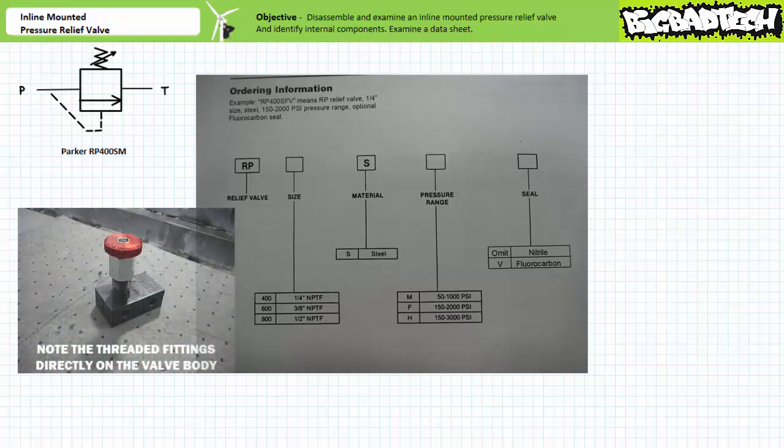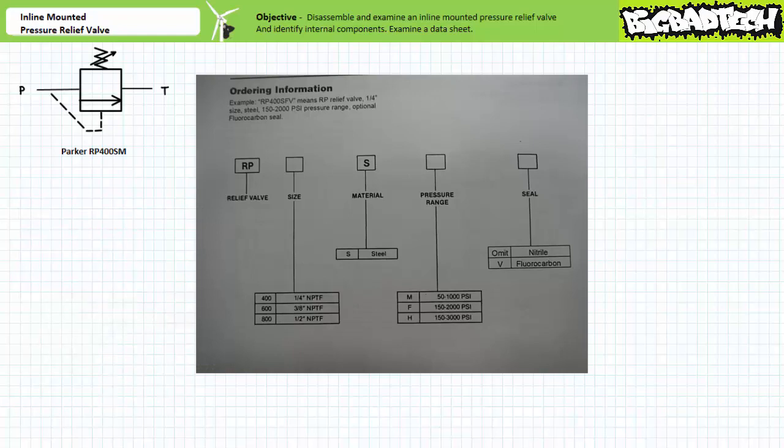This particular valve is inline mounted because fluid conductors are intended to be directly attached to it. S indicates the valve body is made out of steel. The M pressure range indicates the valve is intended to regulate pressure between 50 to 1000 psi. Since the fifth identification field is omitted, we know this valve has nitrile seals.